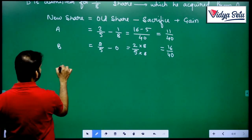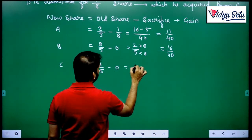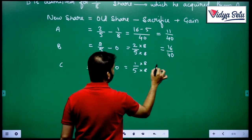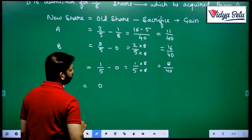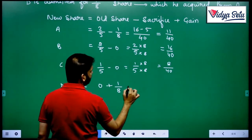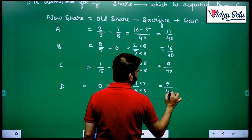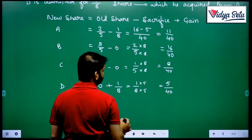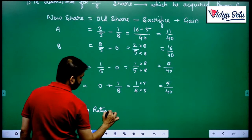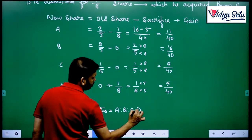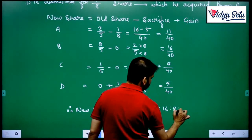For C: 1/5, C is also not sacrificing anything. So 1/5 multiplied to get 8/40. And D is the only one who is gaining — his old share was 0 plus he is getting 1/8, which is 5/40. So the new ratio is A to B to C to D equals 11 to 16 to 8 to 5.